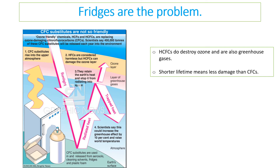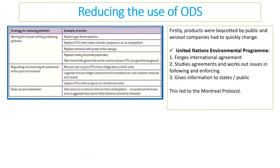Even if we had suddenly stopped using CFCs in the 1980s, it would take up to a hundred years for them to break down before the hole completely disappeared. CFCs are also greenhouse gases, which is something to remember. HCFCs, mainly used in fridges, have a shorter lifespan and are therefore less damaging.